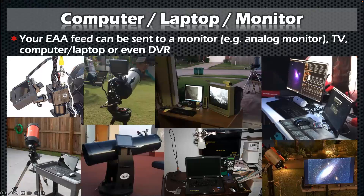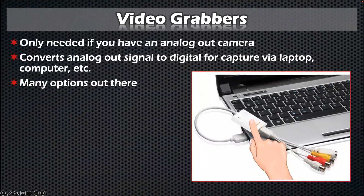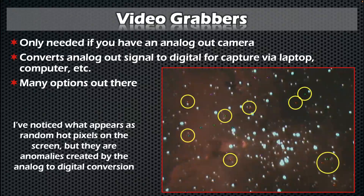If you've got an analog-output camera like the Revolution 2 or some older CCD cameras and want to capture to a laptop, you're going to need a video grabber. My experience was that I would get weird random hot pixels flashing in and out on screen — these are anomalies created by the analog-to-digital conversion. The camera captures digitally, converts to analog, and then you're converting back to digital, so it's not the most efficient process.